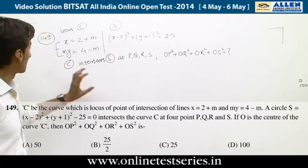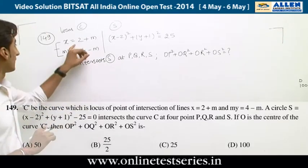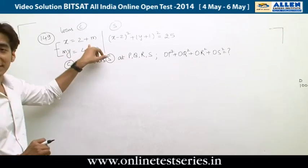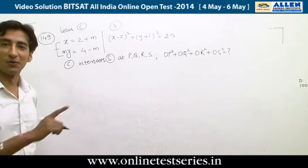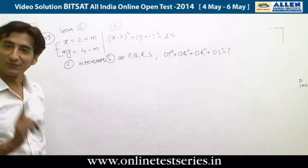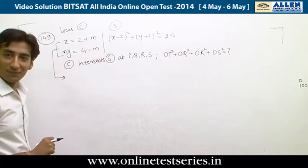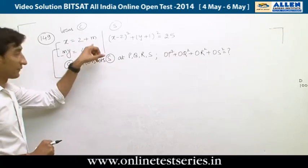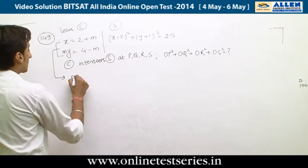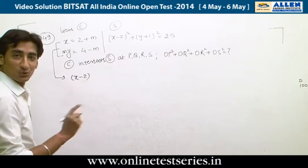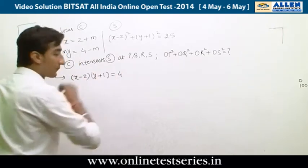Question 149 is again a problem of coordinate geometry. Two lines have a point of intersection whose locus is curve C. To find the locus, we eliminate the parameter M by extracting M from each line equation and equating. This gives the curve C: (x - 2)(y + 1) = 4.